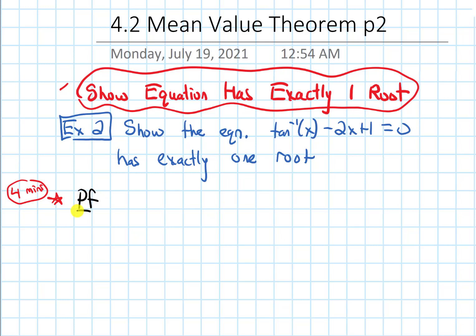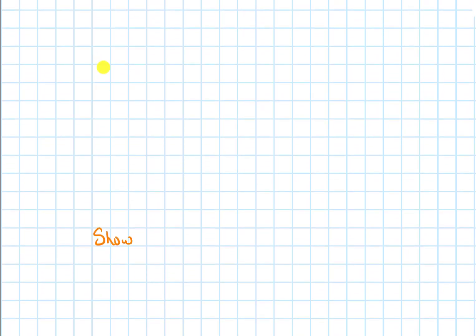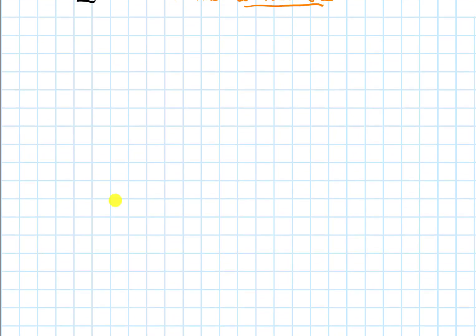Let's get into the proof. There are going to be two parts to our argument. We are going to first show that it has at least one root, and then later we are going to show that it has at most one root. If we can show both of those things, combined, those would imply that it has exactly one. So that's going to be the structure of our argument.